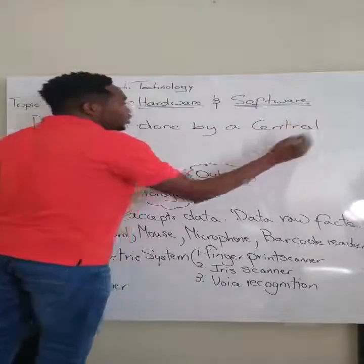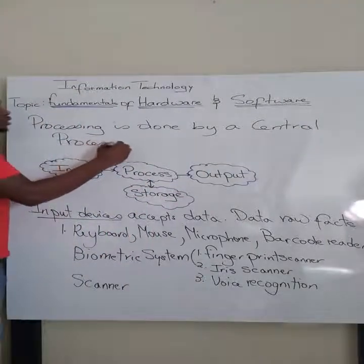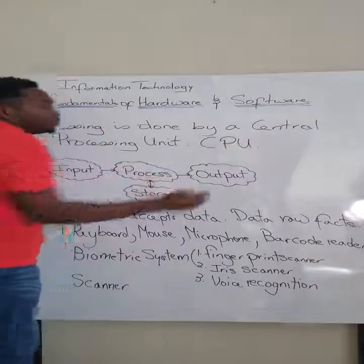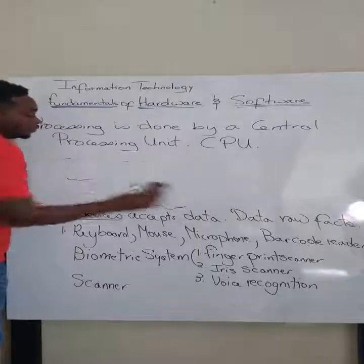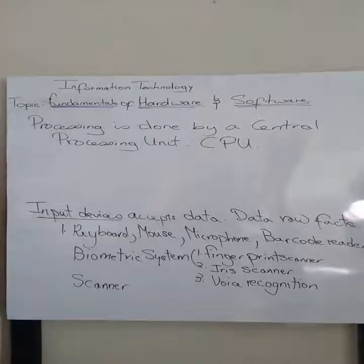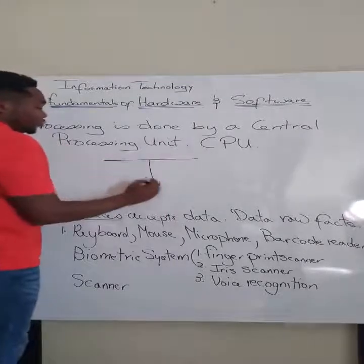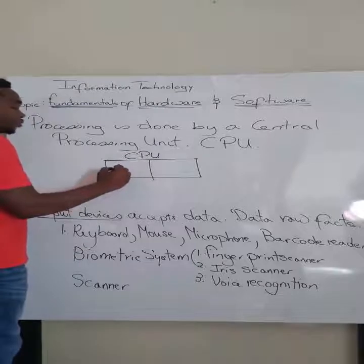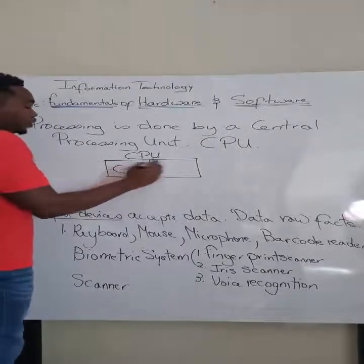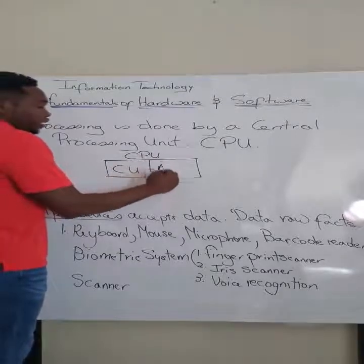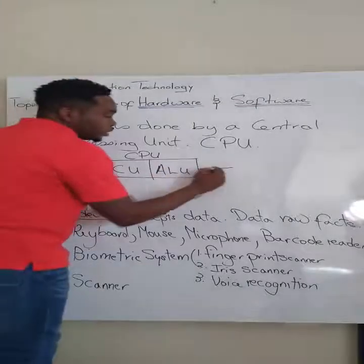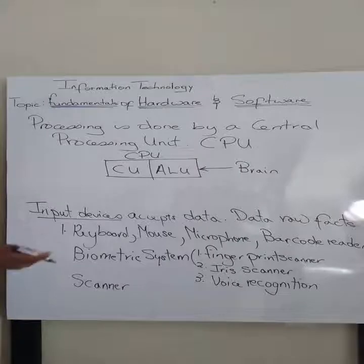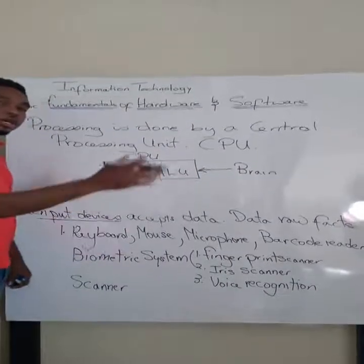Processing is done by the Central Processing Unit — in short, we call it the CPU. The CPU has two parts: the Control Unit and the Arithmetic Logic Unit. The Central Processing Unit is considered to be the brain of the computer system, and it processes all data.